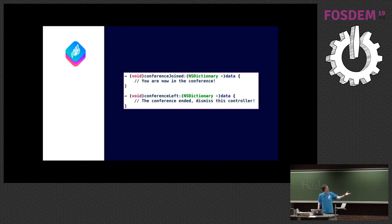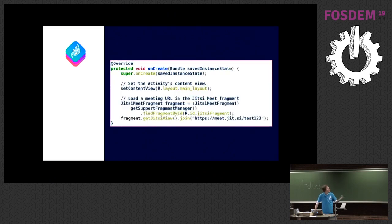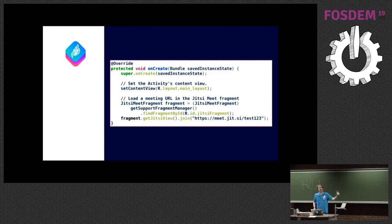You get delegate methods telling you the conference started or ended, and you may want to dismiss your controller, but that's it — you get events to know what's going on. On Android, something new in the SDK is support for fragments: just take a fragment, get the view, call join on it, and you have a view with a Jitsi URL. Then dismiss it and move on with whatever else your application was doing.